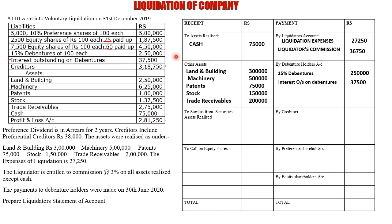There is still another interest outstanding. The payment to debenture holders was made on 30th June 2020, while liquidation occurred on 31st December 2019 — a 6-month gap. The debenture holders will charge interest for this delay at 15% for 6 months on 2,50,000. That is 2,50,000 × 15% × 6/12 = 18,750 interest accrued.